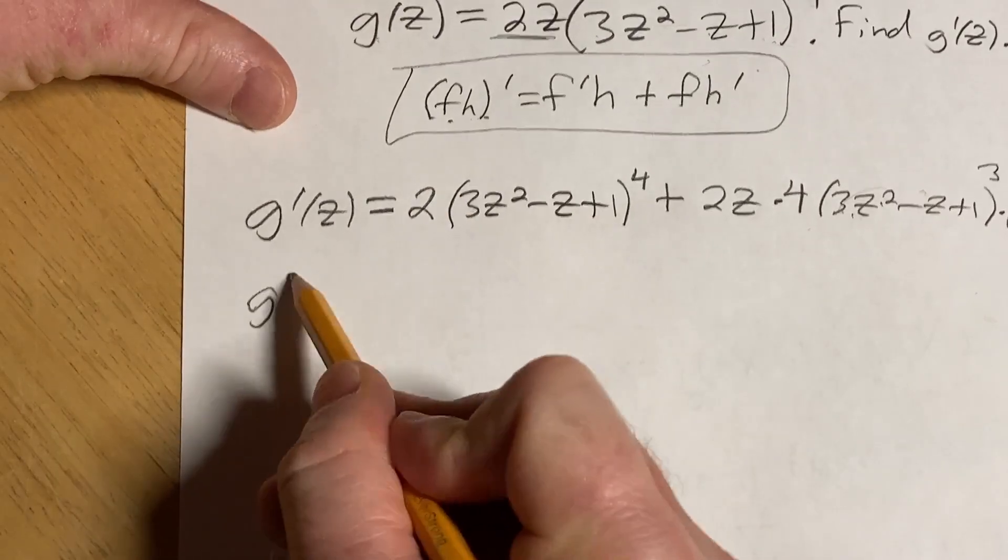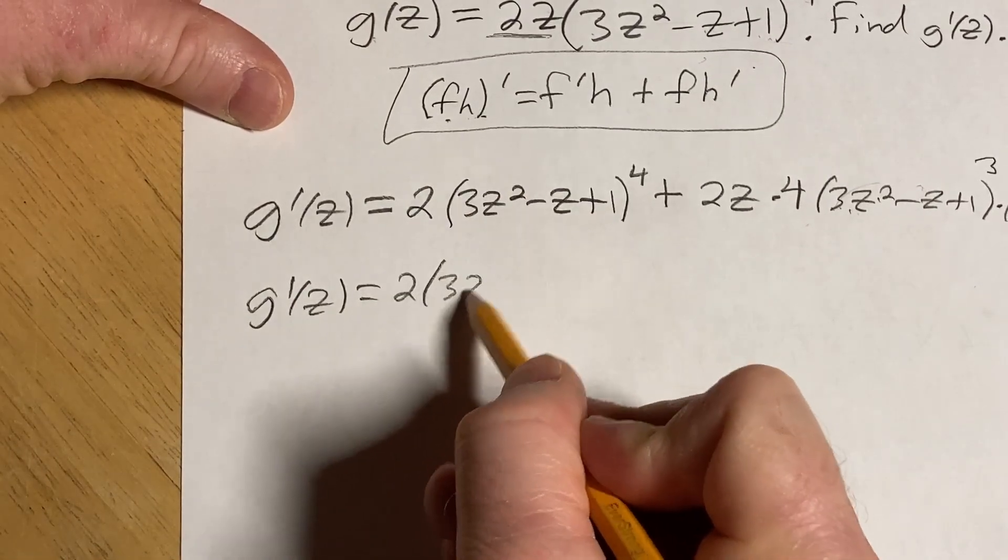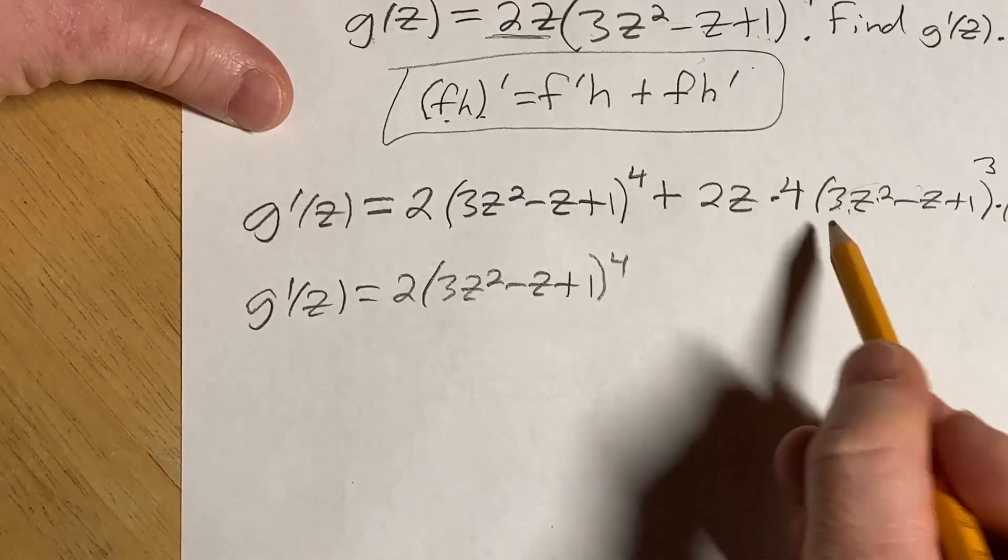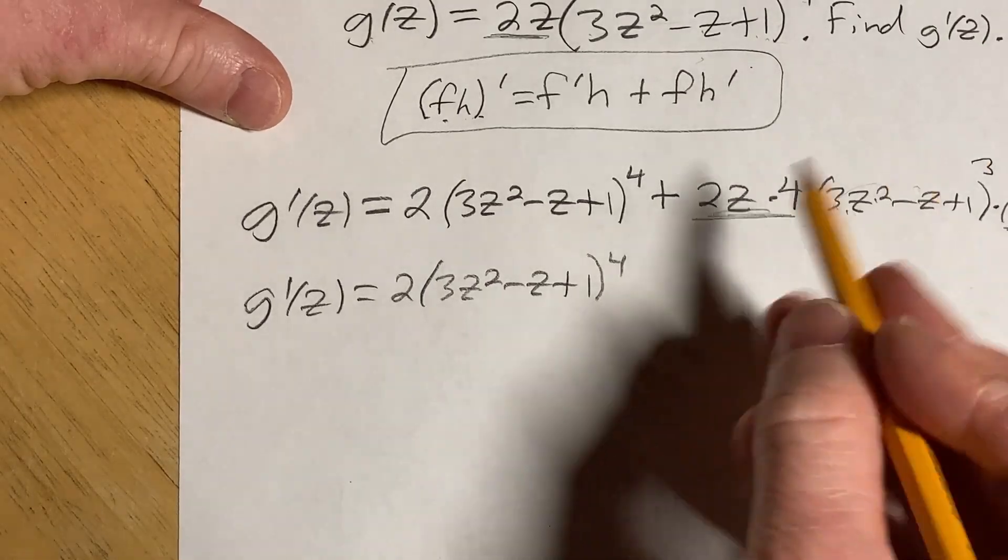All right. Let's clean this up a little bit. g prime of z. So it's 2 parentheses, 3z squared minus z plus 1 to the fourth. And here, this is just going to be 8z. And I'm going to put this in the front.